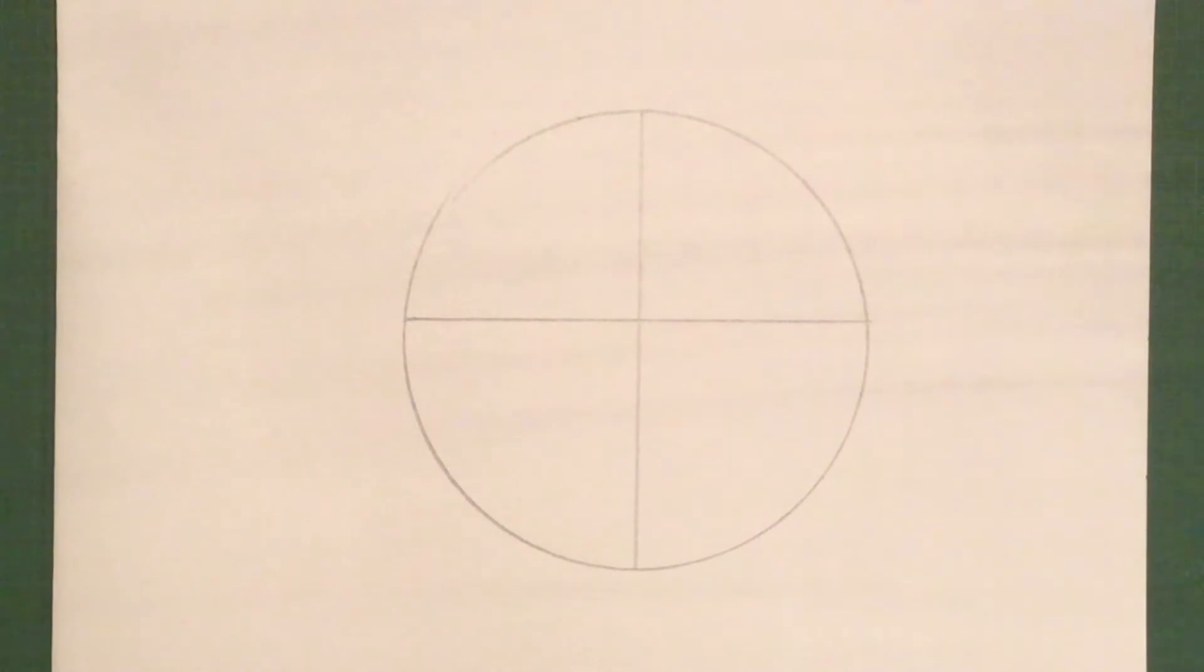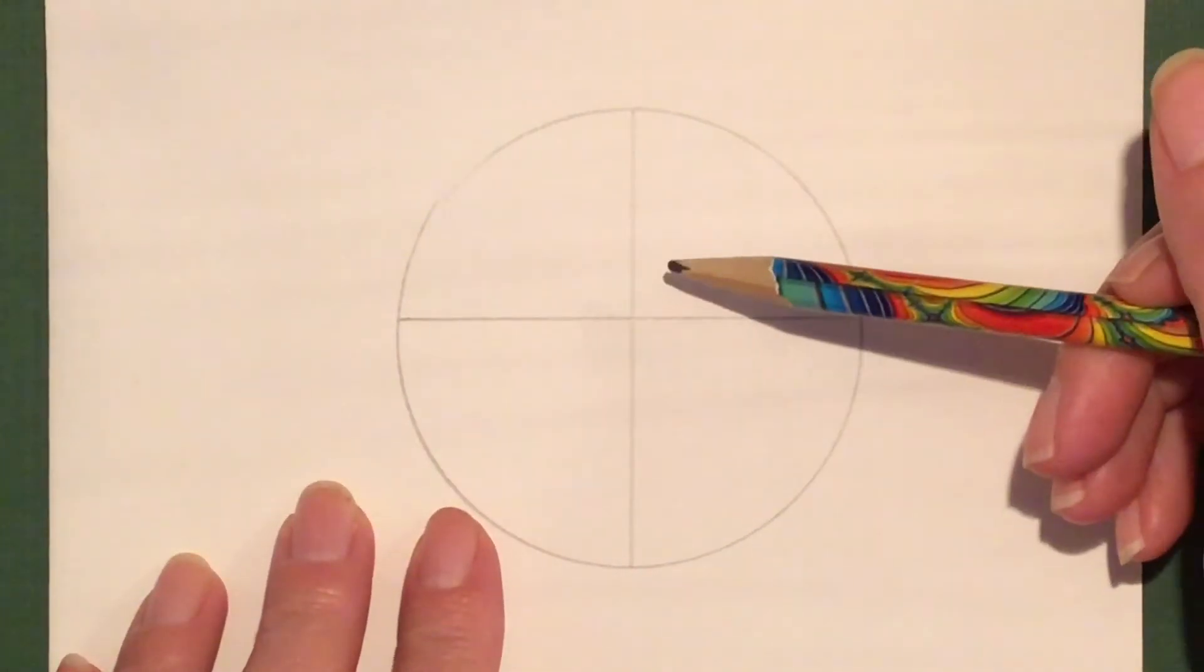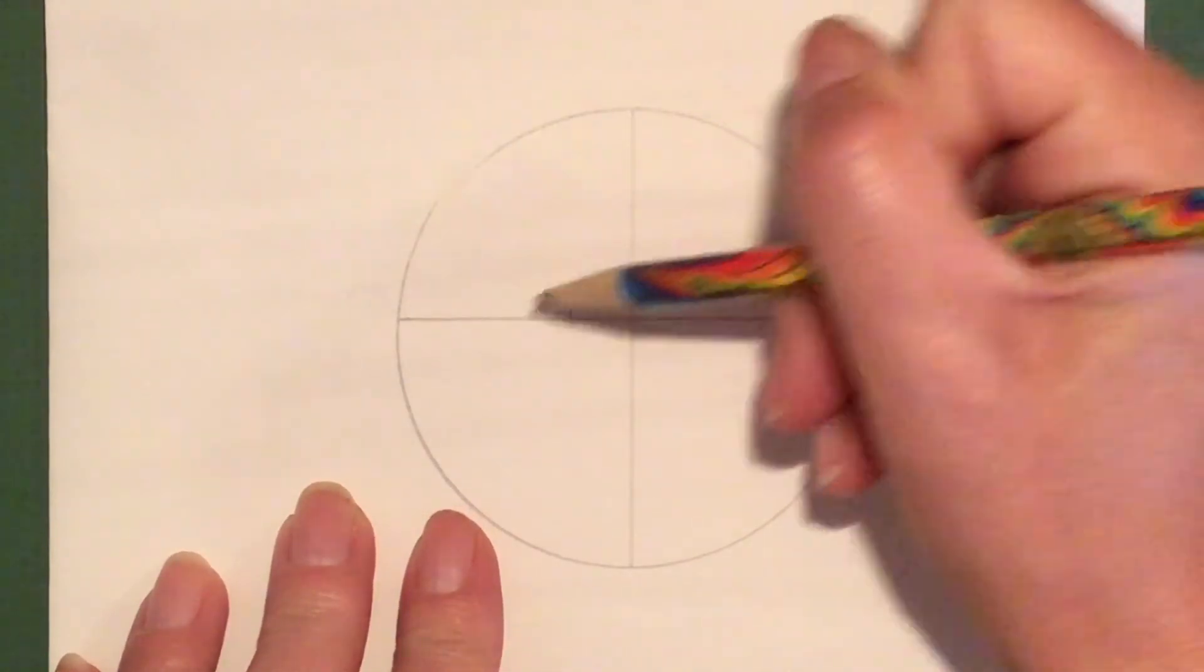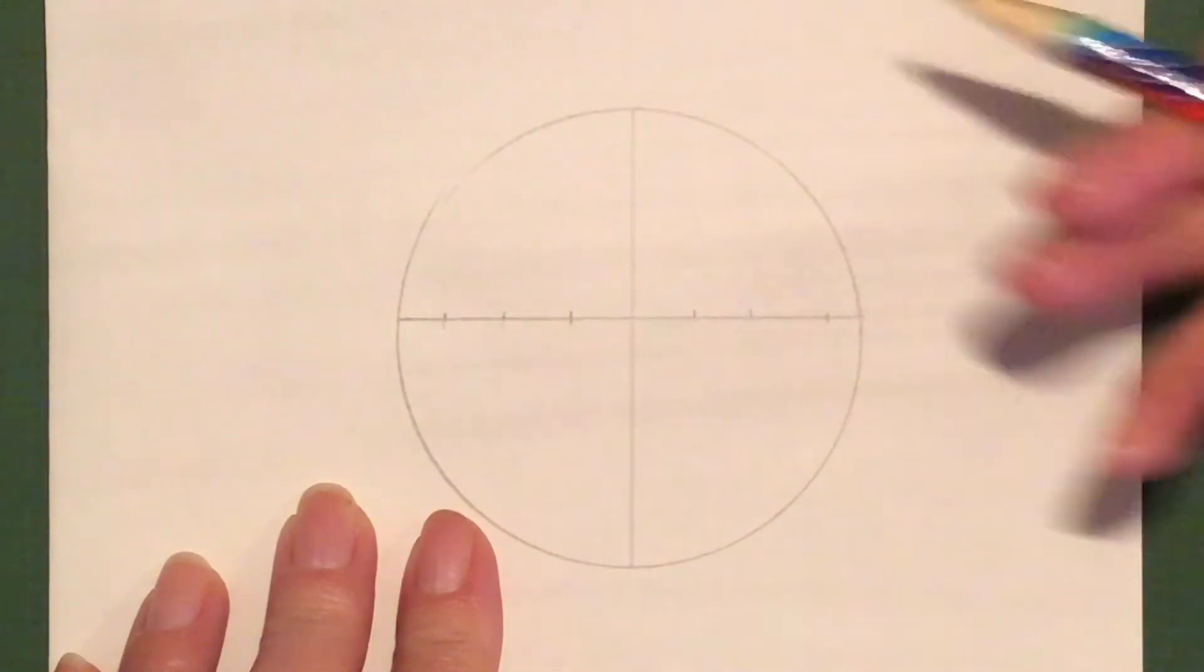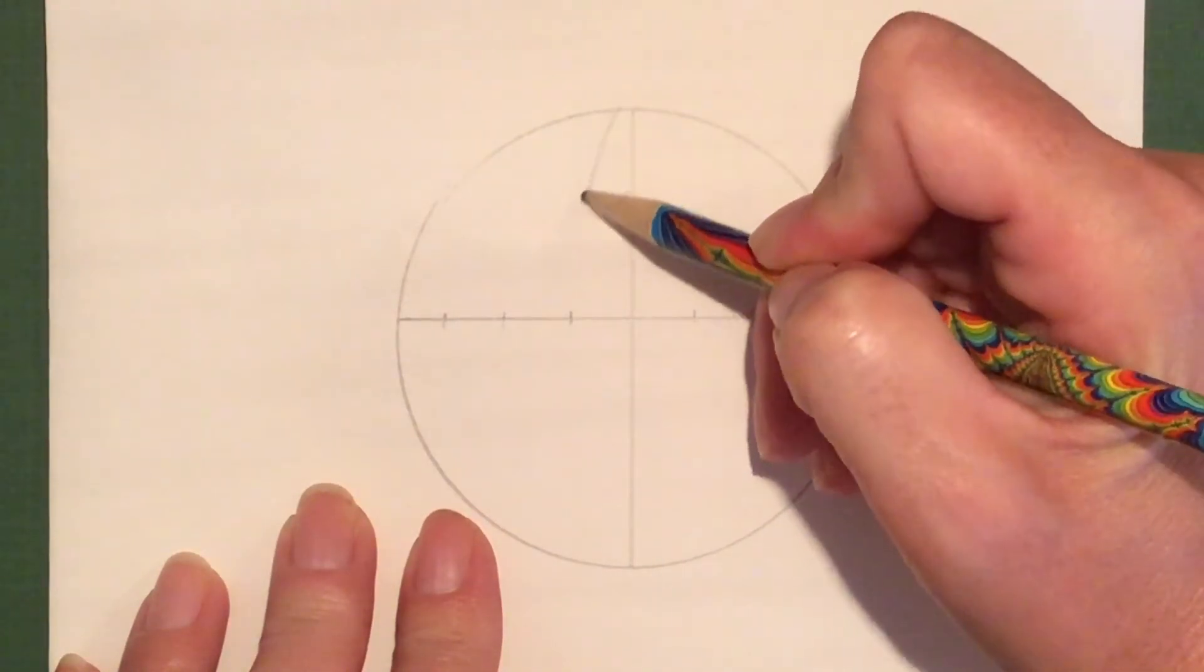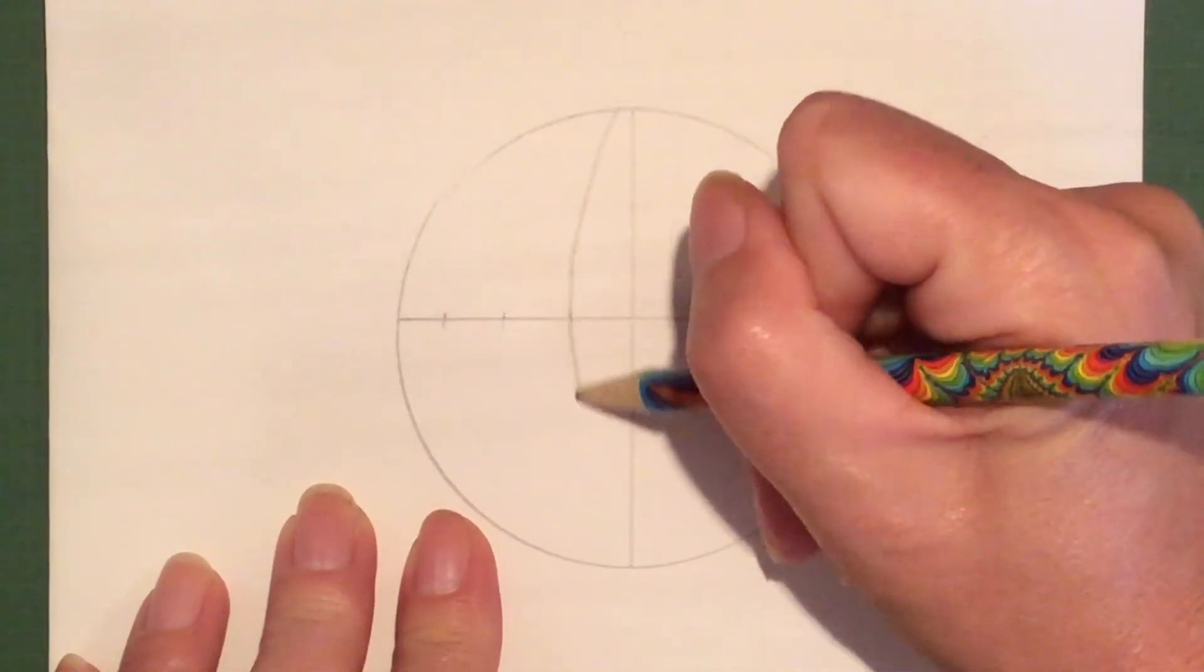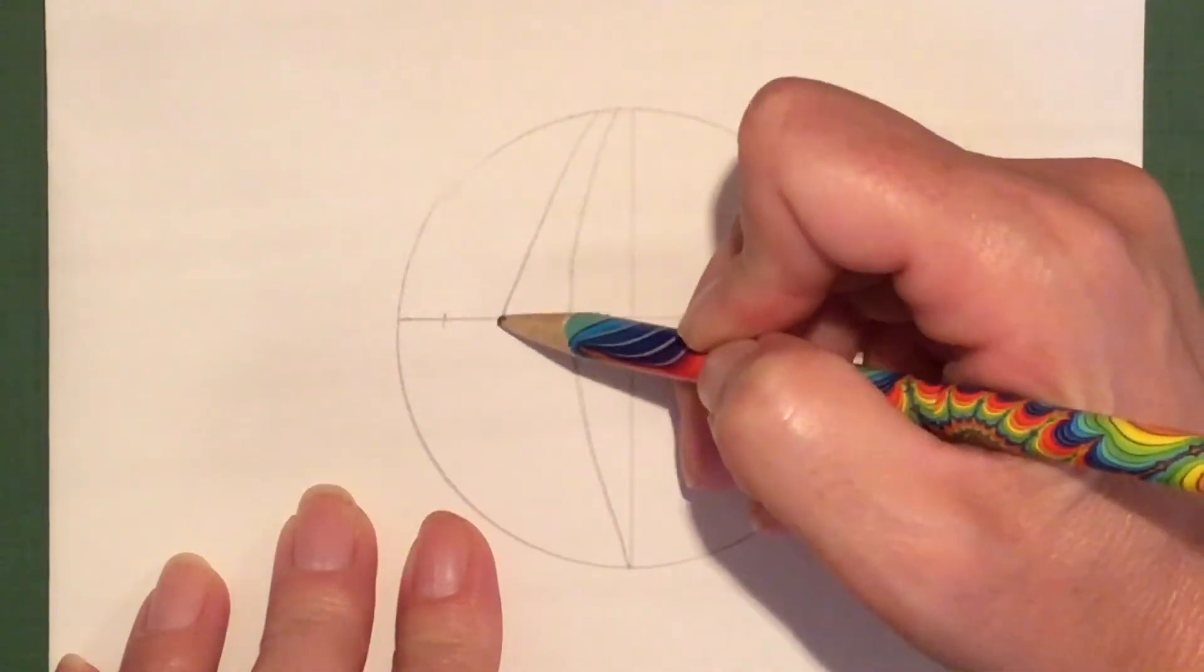Let me show you what not to do when you're making your sphere. Once you have your vertical and horizontal lines on your paper and you put your little marks, what you do not want to do is make straight lines that are going to like a point.